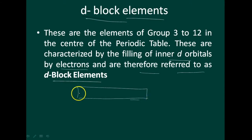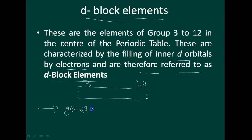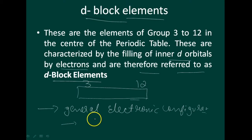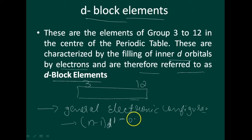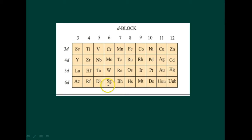From group 3 to 12, they come in the middle of the periodic table. These elements have a general outer electronic configuration of (n-1)d¹⁻¹⁰ ns⁰⁻², meaning the d orbital can occupy a maximum of 10 electrons. This is the general electronic configuration of d-block elements.